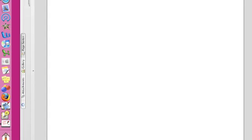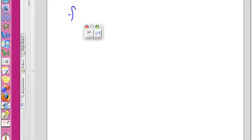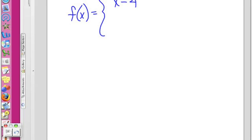Graph f of x equals, and then you'll notice we have this little brace here, and then you've got more than one line going on. x minus 4 if x is less than 2, and 1 if x is greater than or equal to 2.